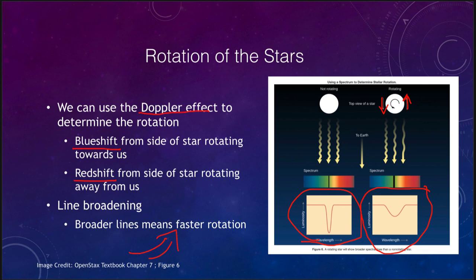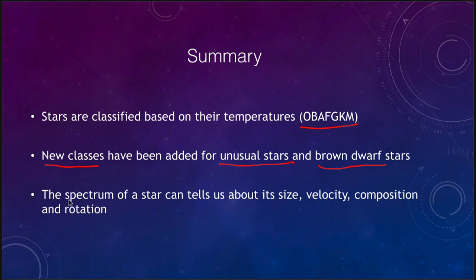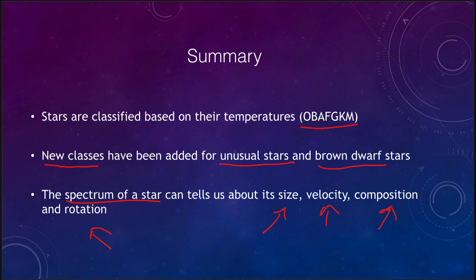In summary, stars are classified based on their temperatures using the OBAFGKM classification system to determine different types of stars. New classes have been added since the late 1800s for more unusual stars and for recently discovered brown dwarfs. The spectrum of a star tells us about its size, velocity, composition, and rotation — so just by looking at the spectrum, we can determine a lot of things that would otherwise be very hard to find. That concludes our lecture on the spectra of stars; we'll be back next time for another topic in astronomy.